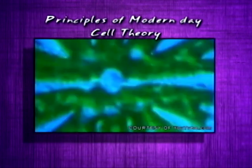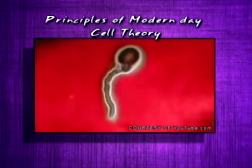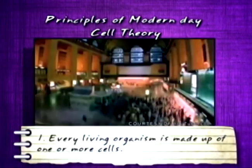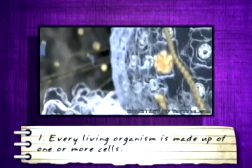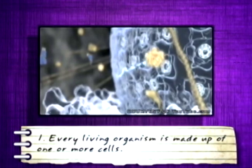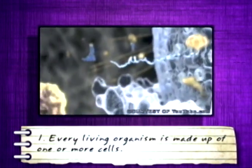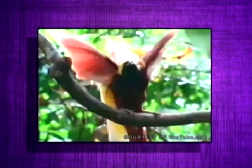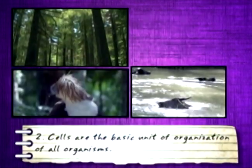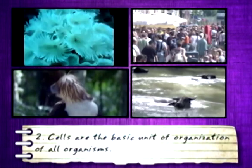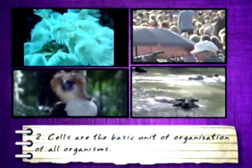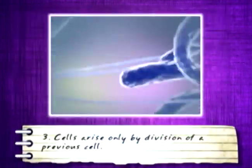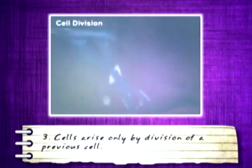The three principles of the modern cell theory state that: First, every living organism is made up of one or more cells — some organisms like bacteria and some protozoans are unicellular, while organisms like plants and animals are made up of many cells. Second, cells are the basic unit of organization of all organisms. Third, cells arise only by division of a previous cell.